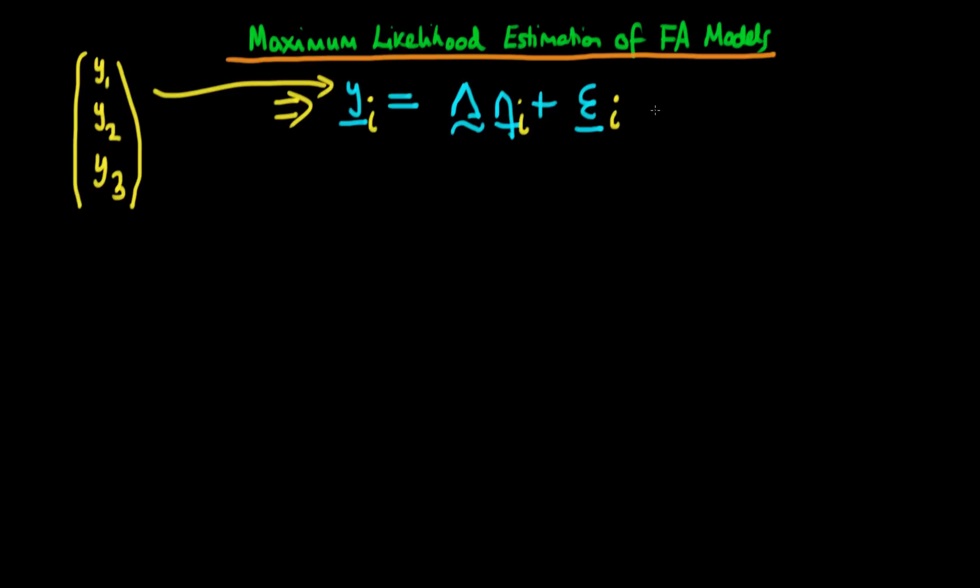What we assume in factor analysis is that this indicator variable Y_i is normally distributed with a mean of zero and a variance given by sigma. Because we assume that these individual Y_i are multinormal distributed, that allows us to come up with a value of the likelihood. So the likelihood for an individual i, which I'm going to write as L of Y_i and sigma, is just given by the multinormal probability distribution, which is 2π to the power minus p over 2, where p indicates the number of indicator variables which we have.